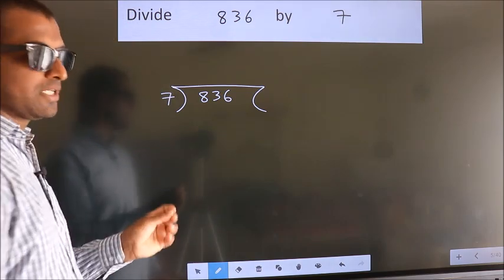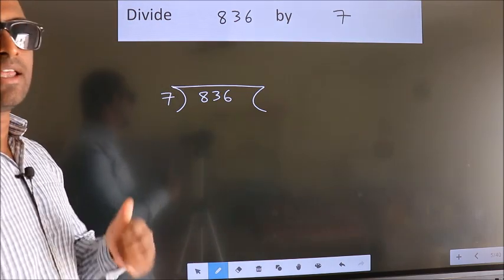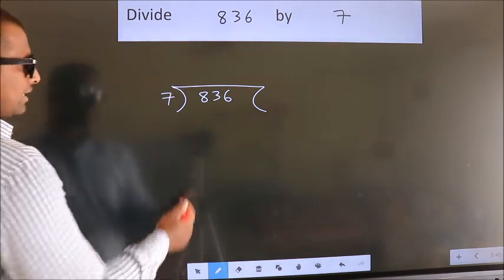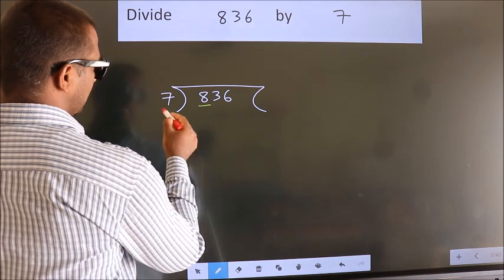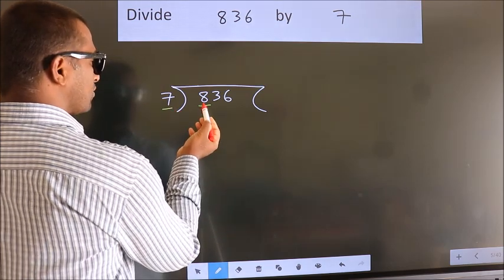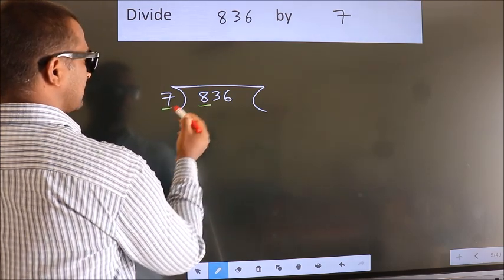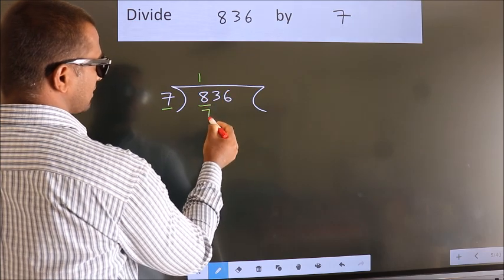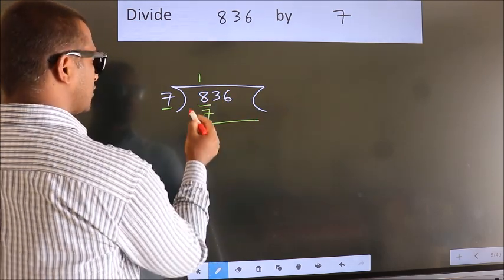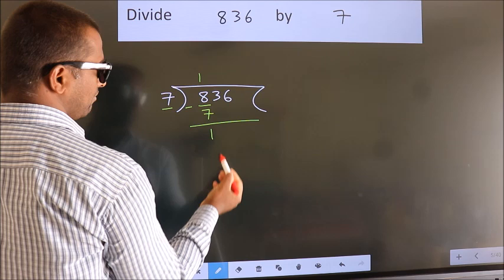This is your step 1. Next. Here we have 8, here 7. A number close to 8 in 7 table is 7 once 7. Now we should subtract. We get 1.